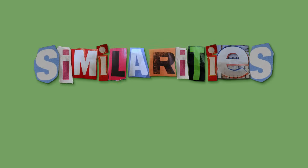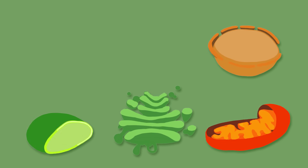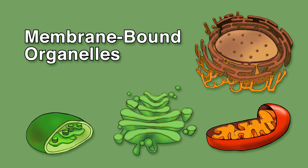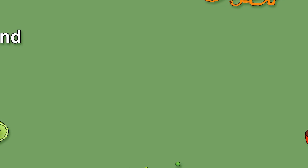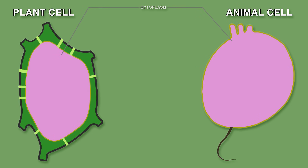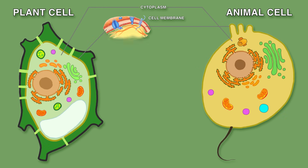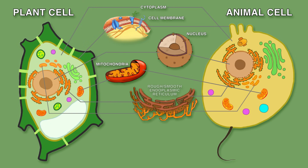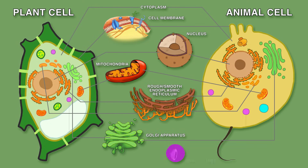So let's discuss similarities. Both animal and plant cells have membrane-bound organelles. They also both have cytoplasm, a cell membrane, a nucleus, mitochondria, rough and smooth endoplasmic reticulum, a Golgi apparatus, and peroxisomes.